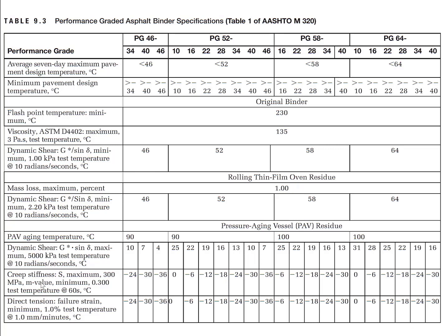The bending beam rheometer test and the direct tension test are performed at the minimum temperature plus 10 degrees Celsius. The creep stiffness should be less than 300 MPa and the m-value should be greater than 0.3 at 60 seconds. From the direct tension test, we measure the failure strain, which should be larger than 1%.